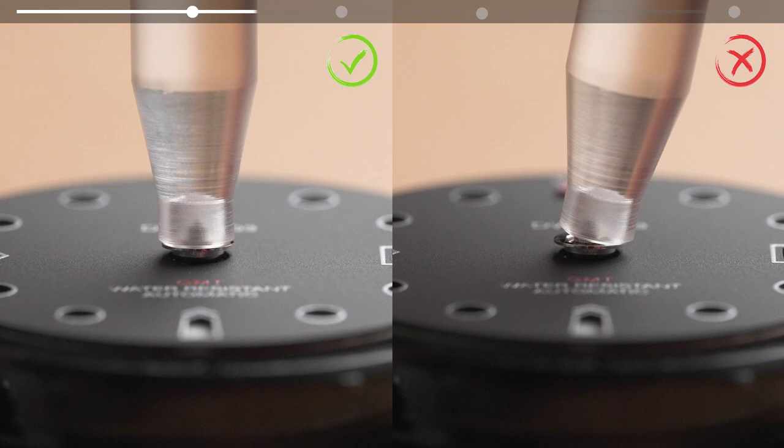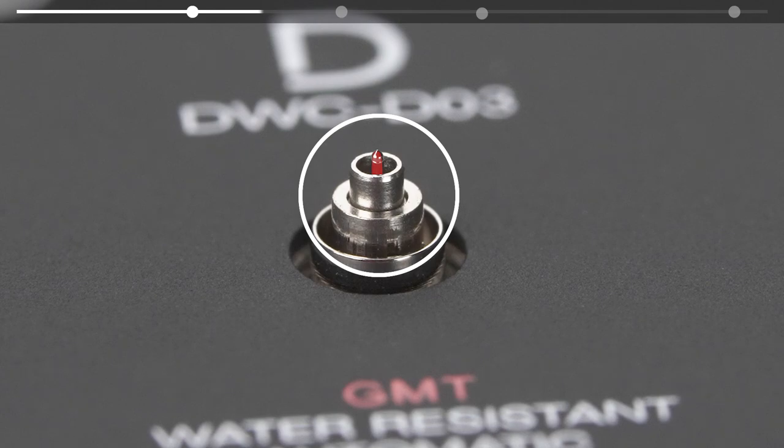Try to keep the tool vertical and align it to the hour wheel. Be careful not to bend the post for the second hand.